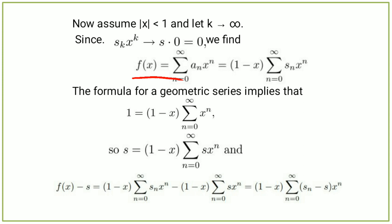The formula for the geometric series implies that 1 equals (1 minus x) times the summation from n equals 0 to infinity of xⁿ. Therefore, f(x) minus s equals (1 minus x) times the summation from n equals 0 to infinity of (sₙ minus s) times xⁿ.